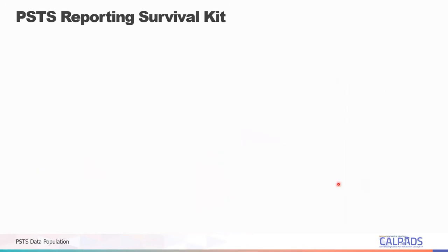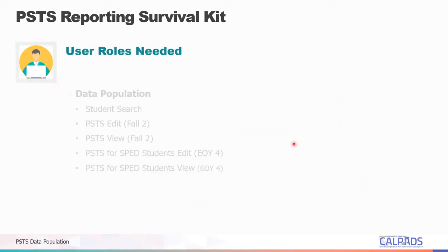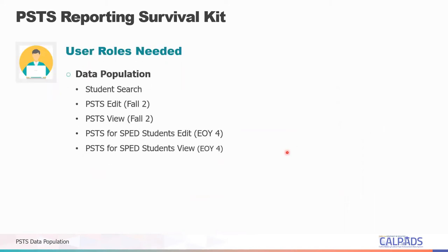To successfully report PSTS data in CALPADS, LEAs need the proper user account roles. For data population, LEAs need the student search role to enable them to search each student by SSID or student demographics. And for Fall 2 submission, LEAs need the PSTS edit role to submit PSTS files coming from the SIS containing PSTS records for CTE completer students.